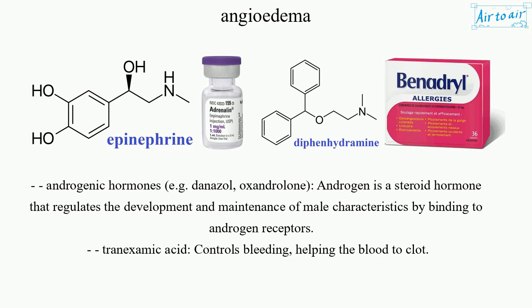Androgenic hormones, e.g. danazole, oxandrolone. Androgen is a steroid hormone that regulates the development and maintenance of male characteristics by binding to androgen receptors. Tranexamic acid controls bleeding by helping the blood to clot.